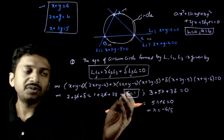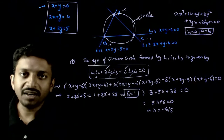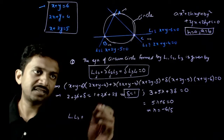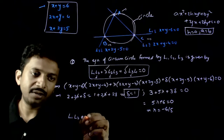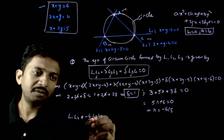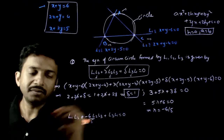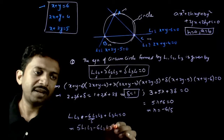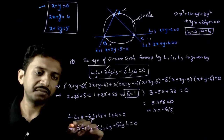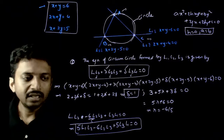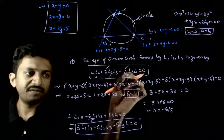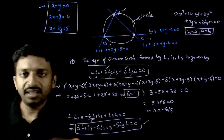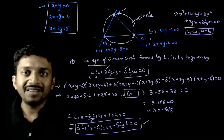Now substituting these two values: the equation becomes L1·L2 − (6/5)·L2·L3 + L3·L1 = 0, which implies 5·L1·L2 − 6·L2·L3 + 5·L3·L1 = 0. This is the required circumcircle. You just put λ = −6/5 and δ = 1 and do the calculations — this gives the equation of the circumcircle of the triangle formed by these three lines.